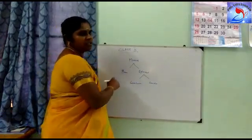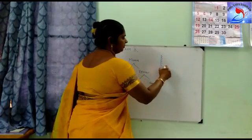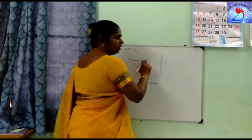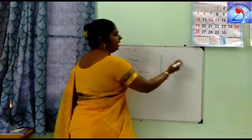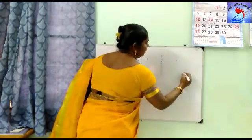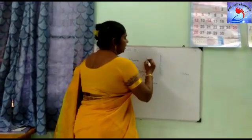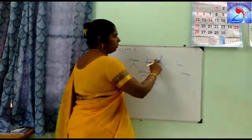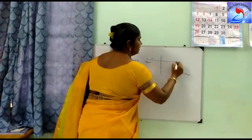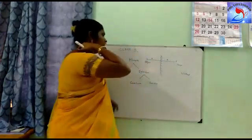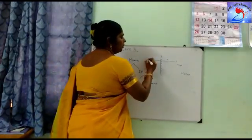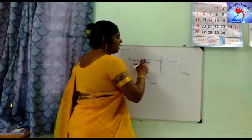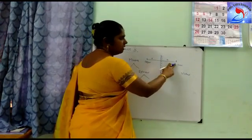Now let us see the properties of the plane mirror. If I have an object in front of the mirror, I see an image behind the mirror, and this image is virtual. The distance between the object and the mirror will be equal to the distance between the mirror and the image. The size of the object will be equal to the size of the image. The object is erect, therefore the image is also erect.